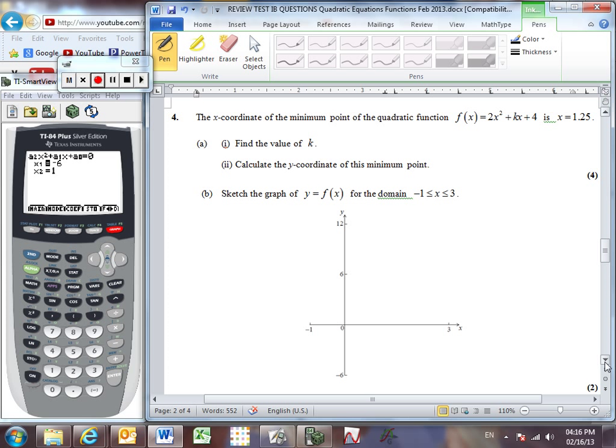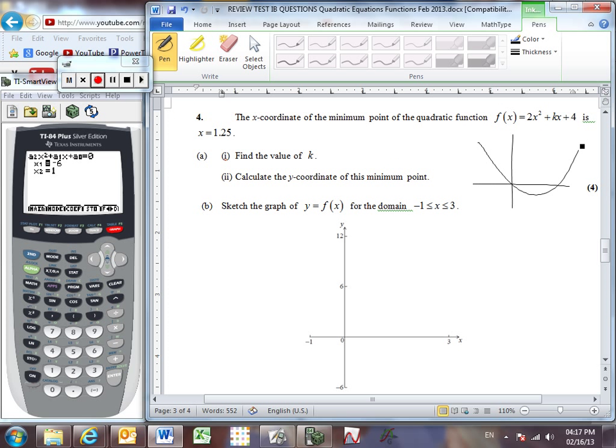Moving on to number 4. The x-coordinate of the minimum point is x equals 1.25. Now, then, let's remember that a minimum point is located, just like a maximum, the vertex, is located right on the axis of symmetry. So, then, we know that x equals 1.25 must be the axis of symmetry. So, we need to find the value of k. Well, the axis of symmetry, we know, is negative b, so our b value is a k, so negative k over 2a. And since x, our axis of symmetry, is equal to 1.25, now we can solve for k. So we'll multiply both sides of the equation by 4, and we'll find that negative k is equal to 1.25 times 4, that's 5, and therefore, k is equal to negative 5.